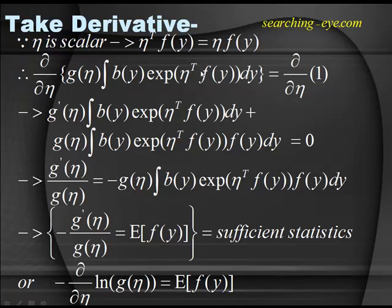You take the partial derivative with respect to eta of the whole function, and applying the chain rule you get G'(eta) times the integral of b(y) exponential of eta f(y) dy, plus G(eta) times the derivative of the exponential term.